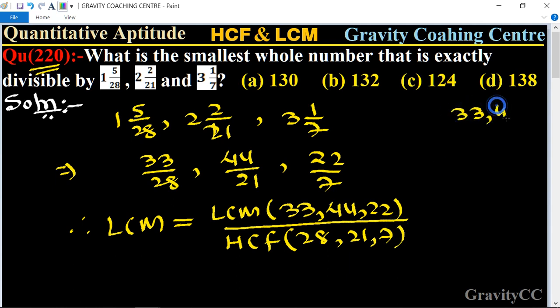So the LCM of 33, 44, and 22: here 44 is cancelled by table of 22. So 11 into 3 and 11 into 4.